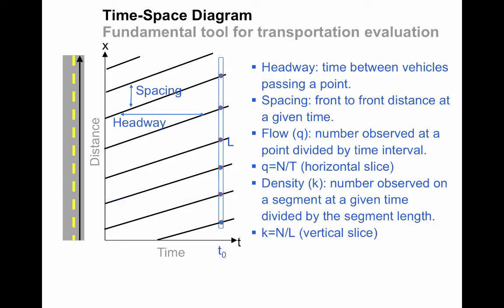When we're thinking spatially, we can cut a vertical slice, and we can observe at a particular time, t0, over a particular distance, in this case, l. The number of vehicles here is 6, so we can calculate the density, which is just the number of vehicles observed divided by the distance, so the density for this particular segment is 6 divided by l, as shown.